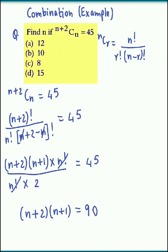Now proceeding further, we could write this as n plus 2 into n plus 1. Now 90 could be factorized as 10 into 9.